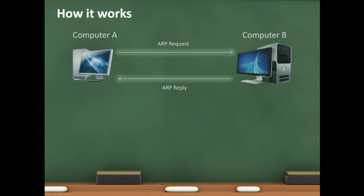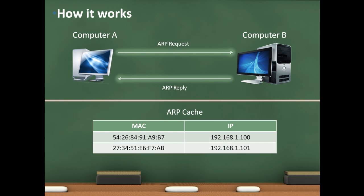ARP is centered around ARP requests and replies. For example, Computer A sends an ARP request throughout the network asking for a certain IP address. Computer B, which has the IP address that Computer A was looking for, replies with its IP address and MAC address. Because Computer A has correctly identified Computer B using the request, the IP and MAC address is now stored in the ARP Cache.